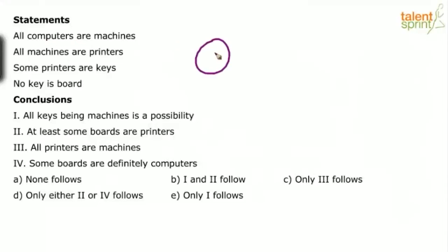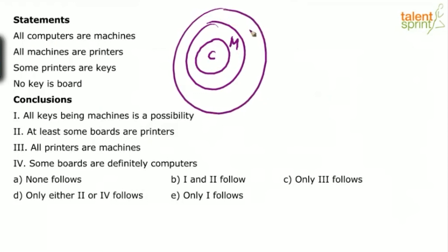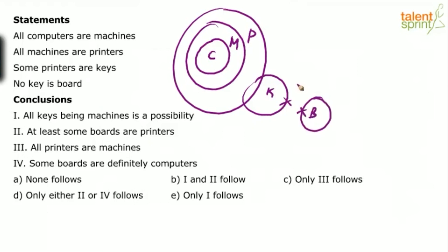All computers are machines. All machines are printers. Some printers are keys, and no key is a board. That's the diagram setup. Now look at the conclusions.